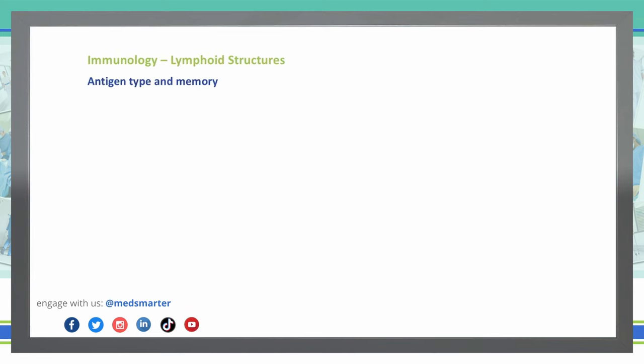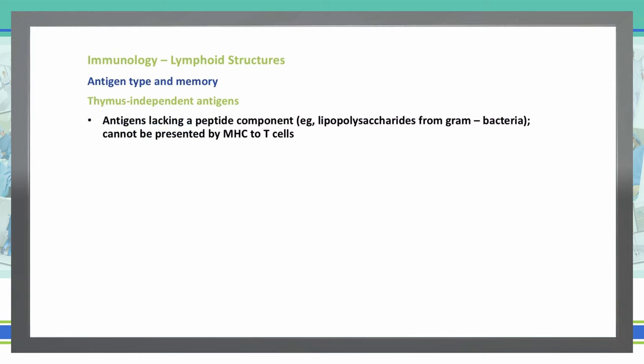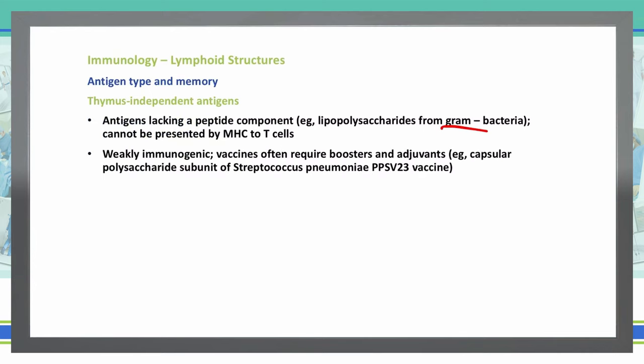Let's talk about memory from antigens. We have several different types, specifically the thymus-independent antigens. These are antigens that lack a peptide component, such as lipopolysaccharides from gram-negative bacteria. They cannot be presented by MHC to our T cells. These are weakly immunogenic, so we're often going to have to have boosters and adjuvants to our vaccines.